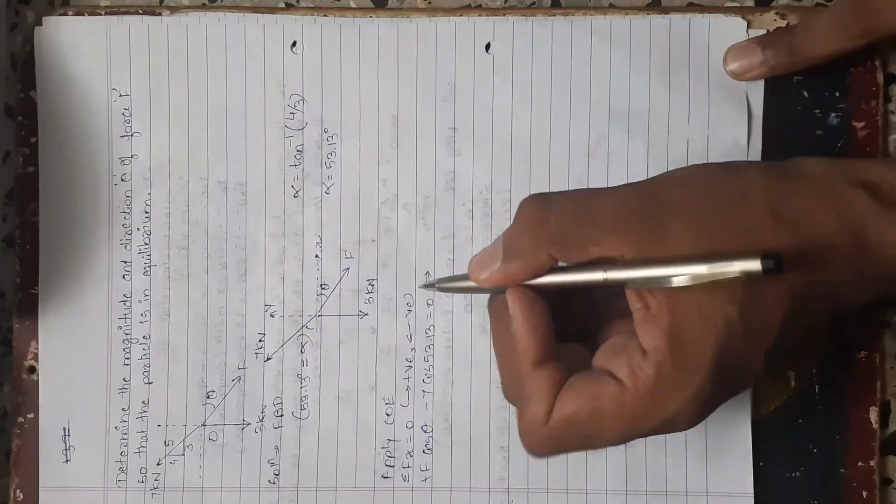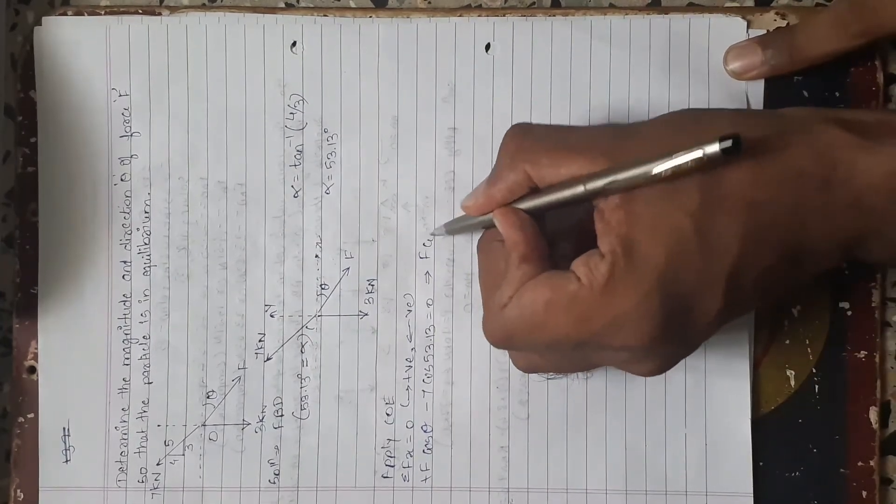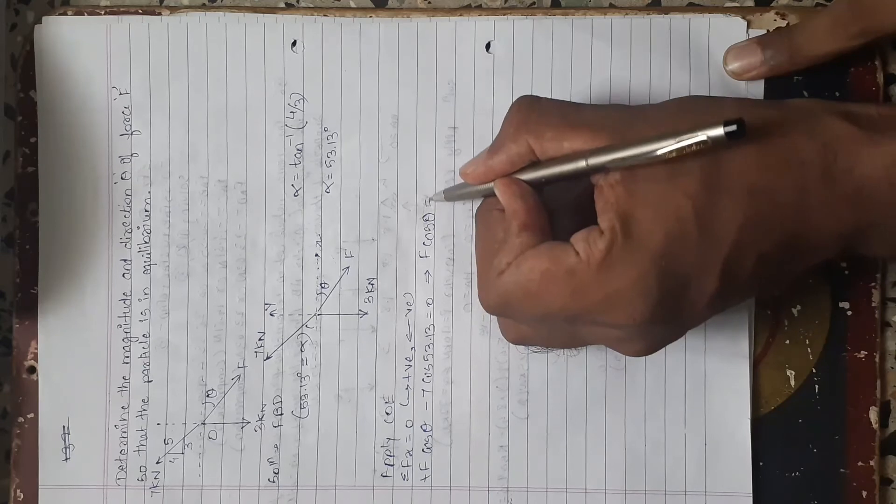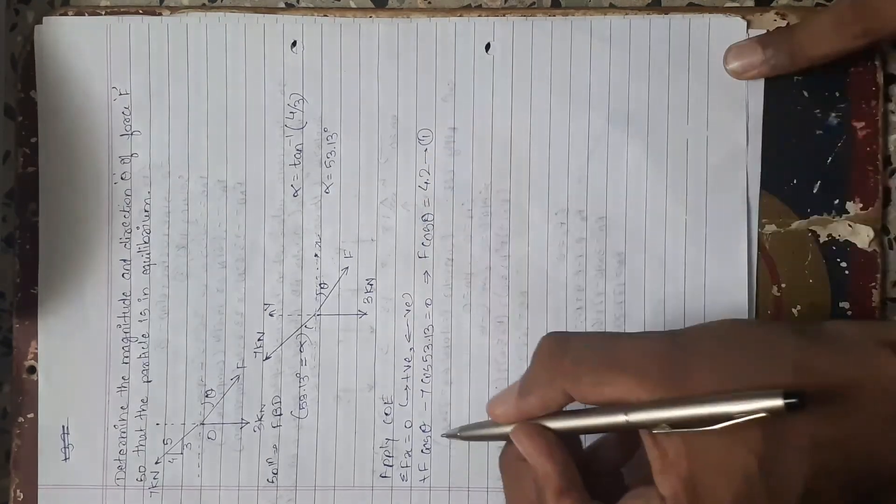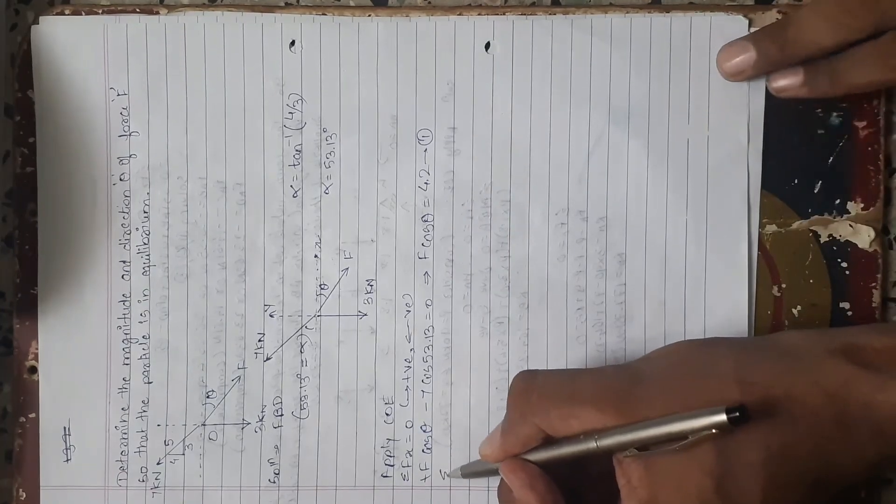On simplification it becomes F cos theta equals to 4.2. We will do it equation 1. We will apply second condition of equilibrium.